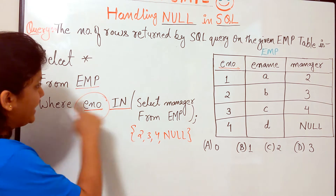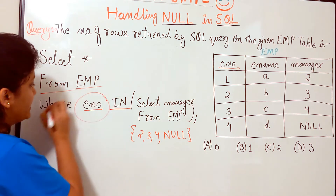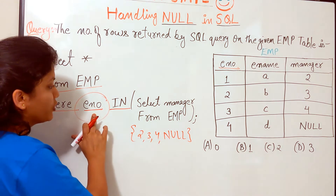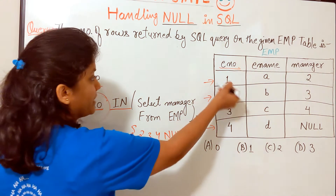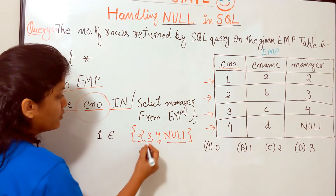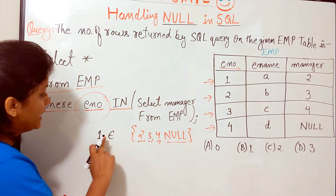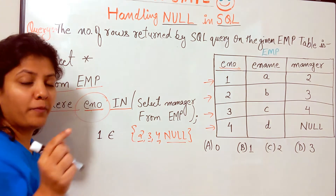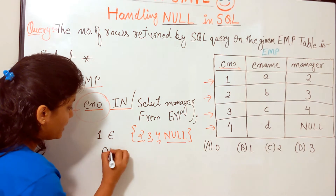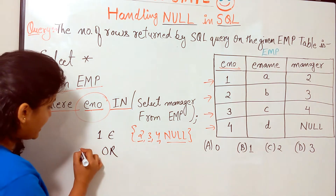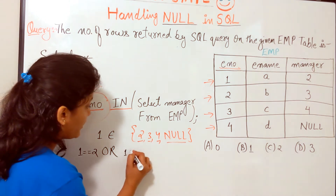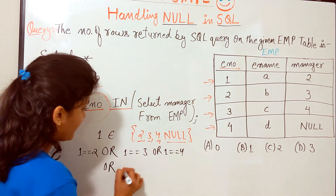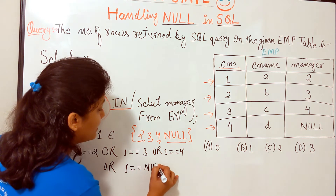For each tuple in the employee table, the condition is checked: does the employee_number belong to this set? The first tuple has employee_number = 1. The IN clause expands using the OR operator: we check whether 1 = 2 OR 1 = 3 OR 1 = 4 OR 1 = NULL.